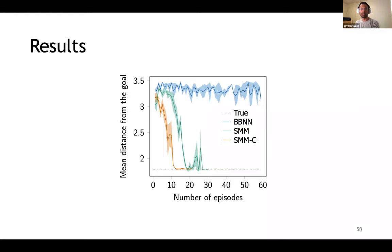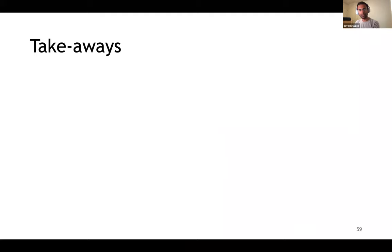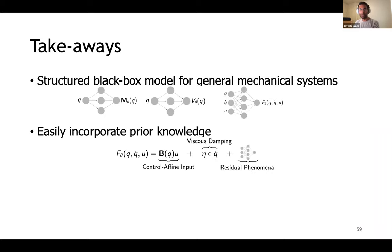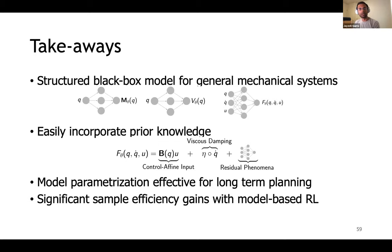And just to confirm, the results stay consistent across multiple runs with different seeds. To summarize this section, we introduced structured models for modeling general mechanical systems that can easily incorporate any prior knowledge. We showed how this parameterization is effective for long horizon planning and found significant sample efficiency gains with model-based reinforcement learning. Now let's see if we can do something interesting even without a full-blown dynamical system model.